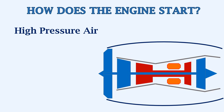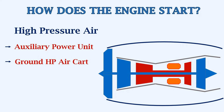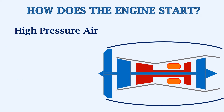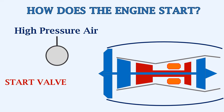For starting the engine, the first requirement is a source of high pressure air. This air may be taken from the auxiliary power unit, or APU, a ground high pressure air cart, or from the other engine if it is already running. The flow of high pressure air is controlled by a start valve. The start valve opens based on inputs from the cockpit.